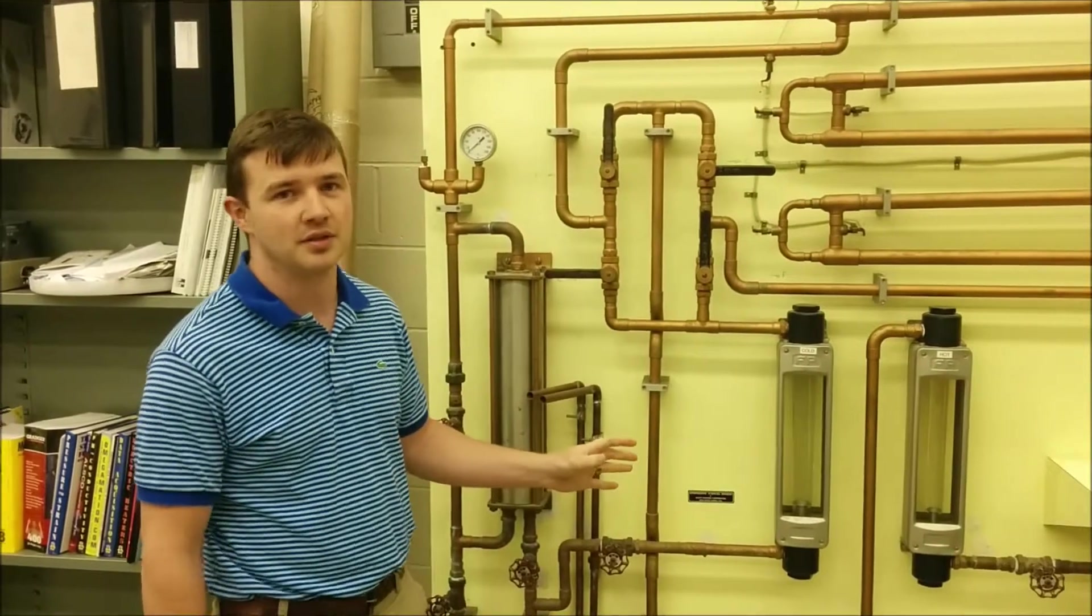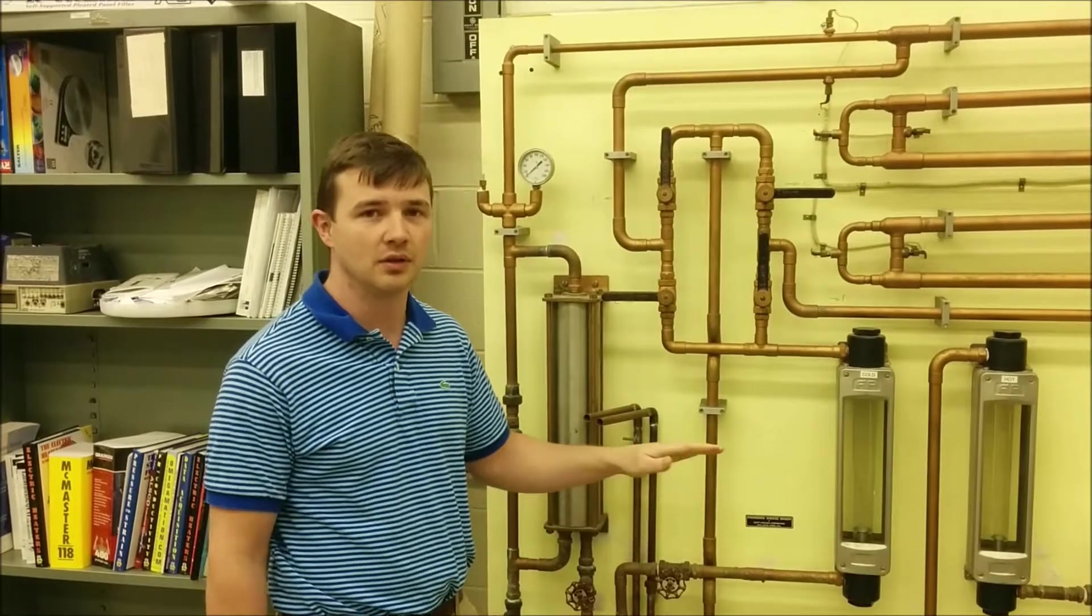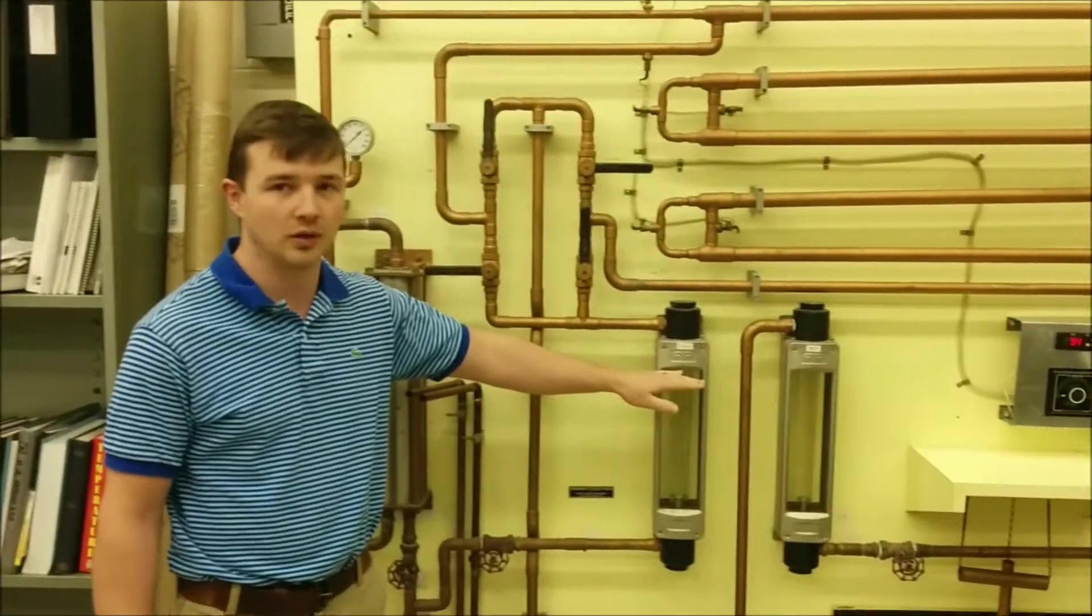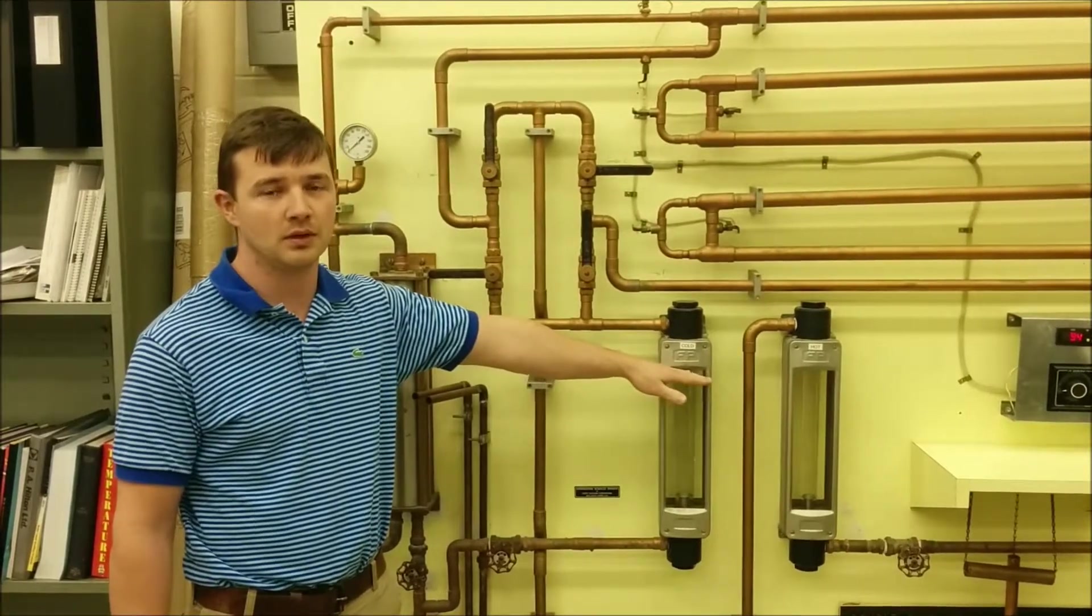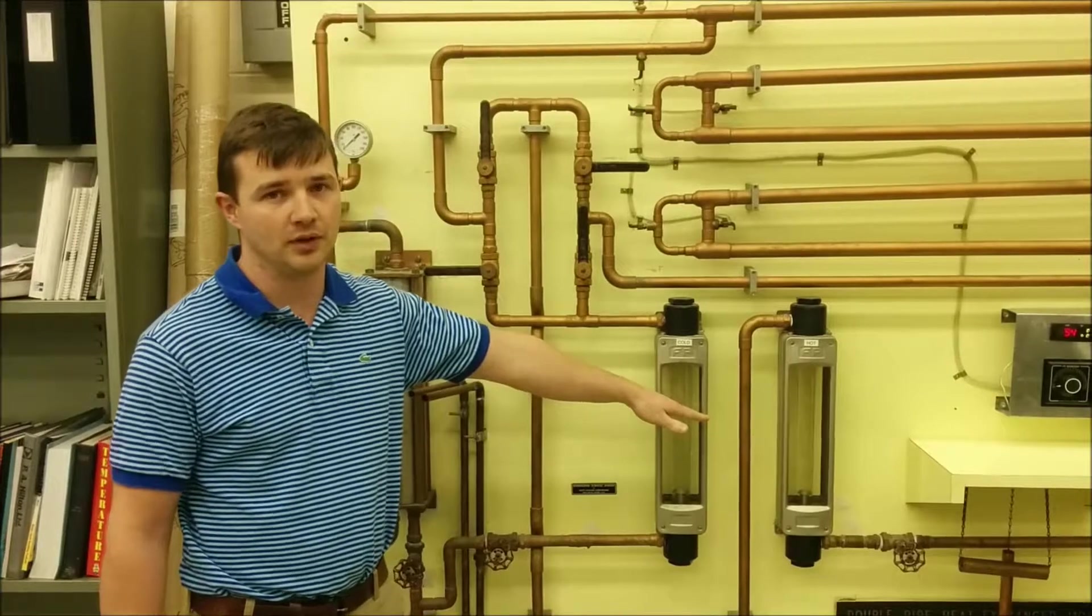The concentric double pipe heat exchanger is going to be run a total of four times. Two times in parallel configuration at different flow rates, and two times in counterflow configuration at different flow rates. You're only going to adjust the cold water flow rate. You can run one experiment at full and then one at about half for both the parallel and counterflow configurations.